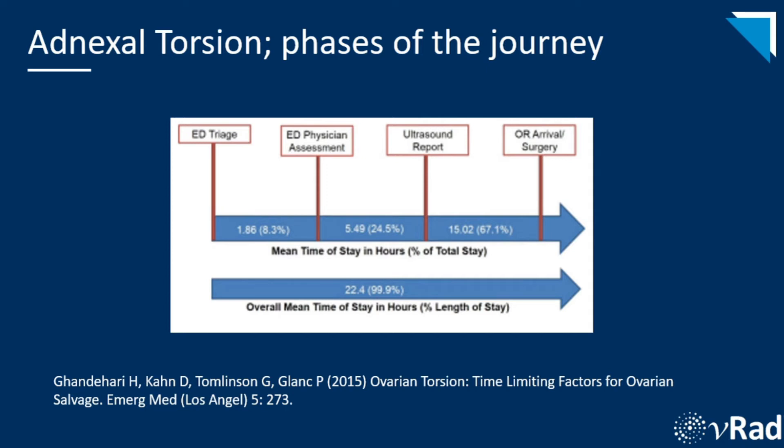A retrospective study out of Toronto reviewed 86 cases of surgically proven adnexal torsion and examined the time between four pivotal points in making the diagnosis and surgery. The mean time between presenting to ED triage and physician assessment was almost two hours. From that assessment to receipt of an ultrasound report was five and a half hours. From that report to OR arrival time was 15 hours, giving an overall mean time of about 22 hours. This nicely illustrates how the steps in the patient journey can add up to significant delay, ultimately decreasing the odds of salvaging the ovary.